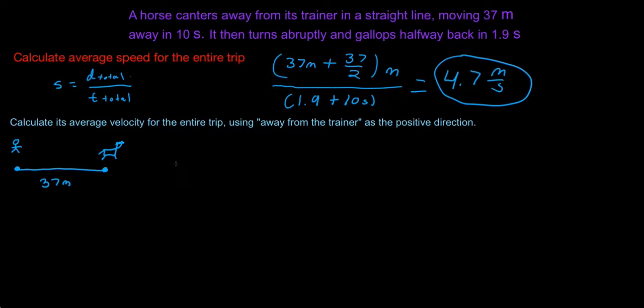So it goes 37 meters. That's the positive direction, because we're going away from the trainer. But now we're going back towards the trainer, which would be the opposite direction. So this would be negative.